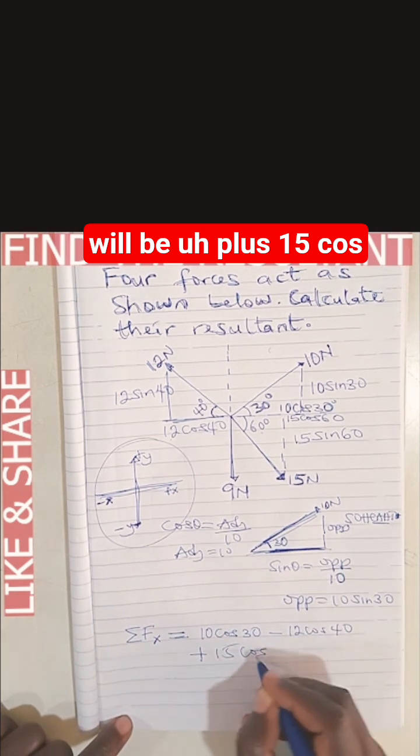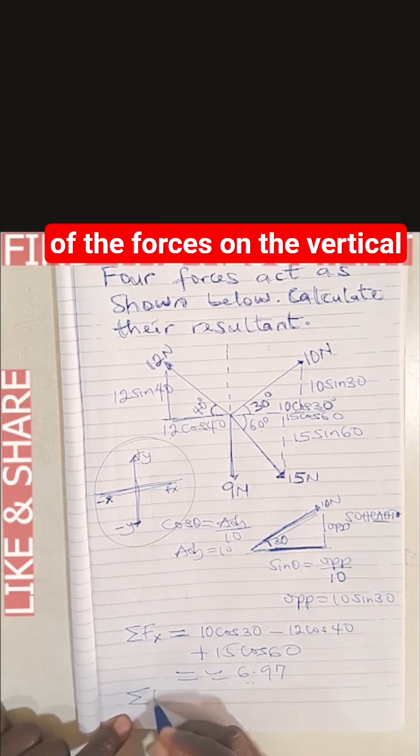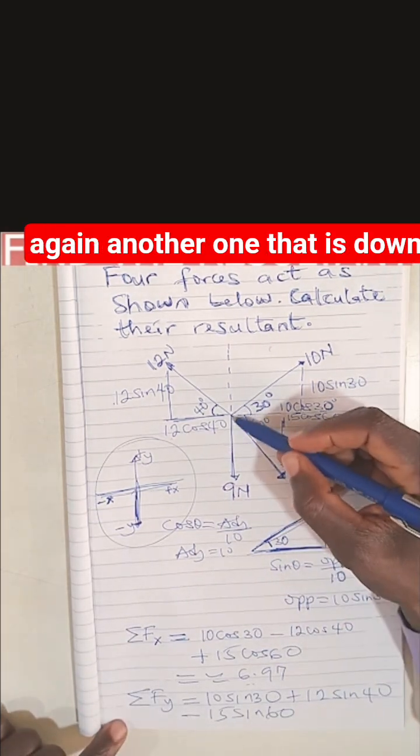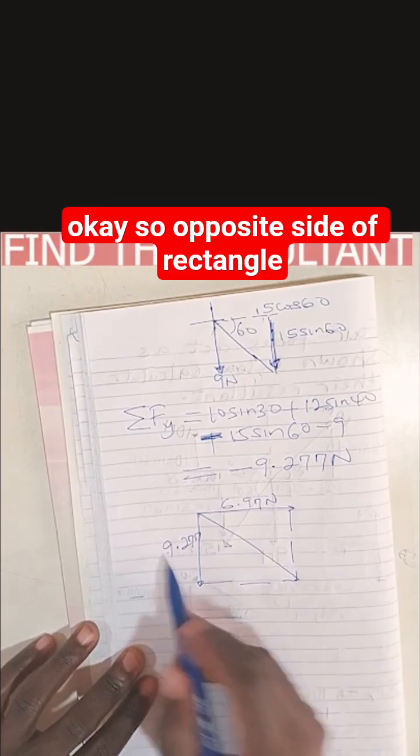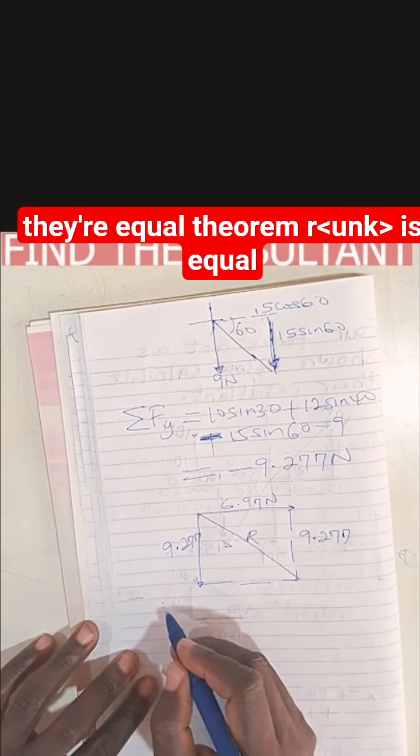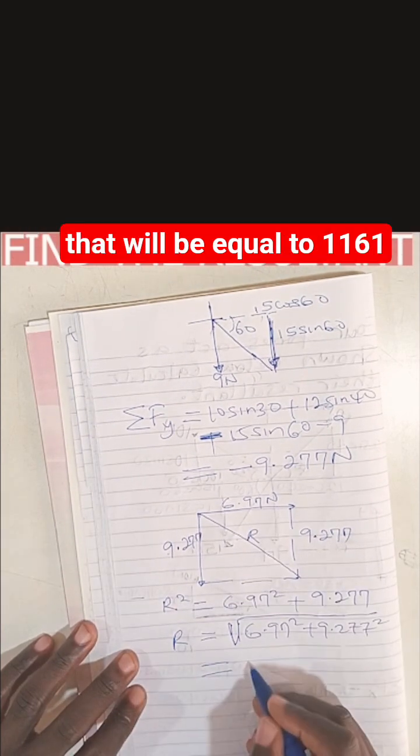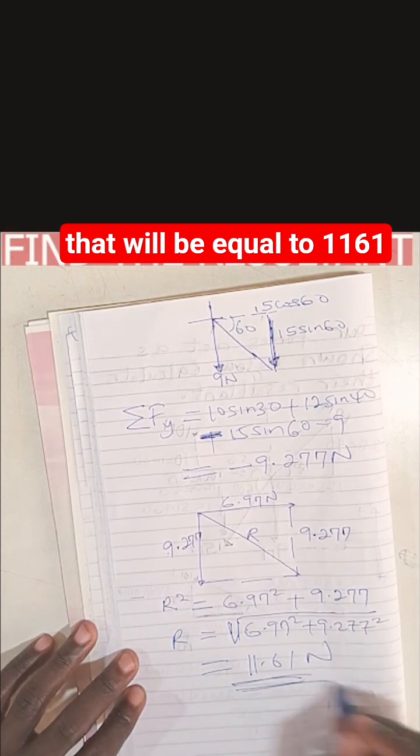Let's get the summation of the forces on the vertical. The one that is down is 9, that's minus 9. Now using Pythagorean theorem, R squared equals... the resultant is equal to 61.19. So that's that.